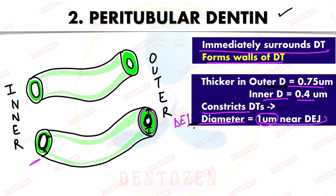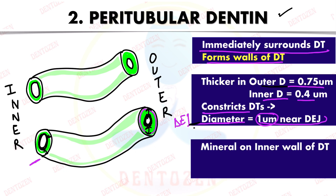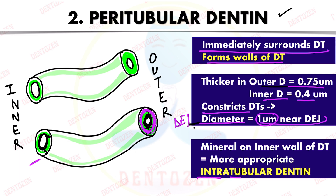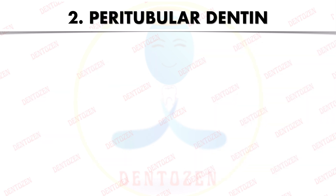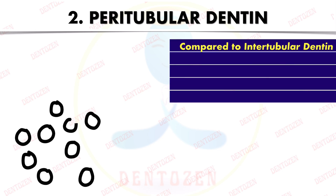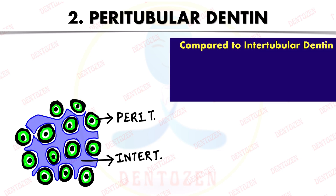Because this mineral is deposited on the inside wall of the tubule, the more appropriate term is intratubular dentine — 'intra' means inside. So intratubular dentine is another name for peritubular dentine, and it is actually the better term.